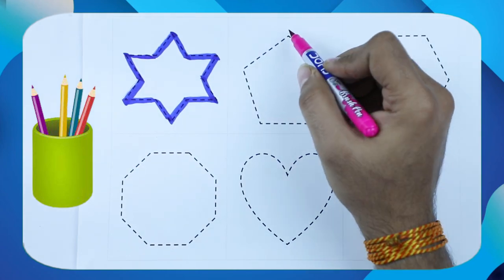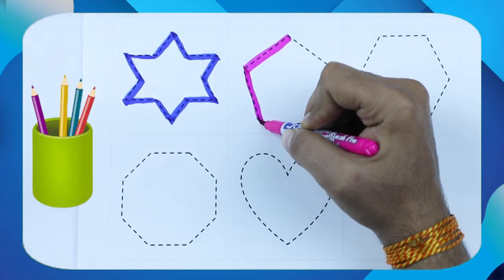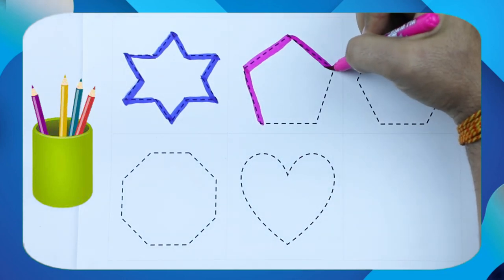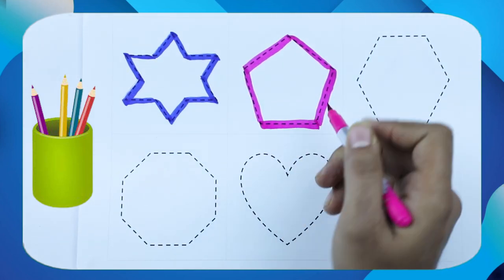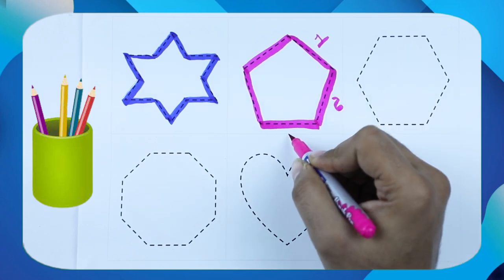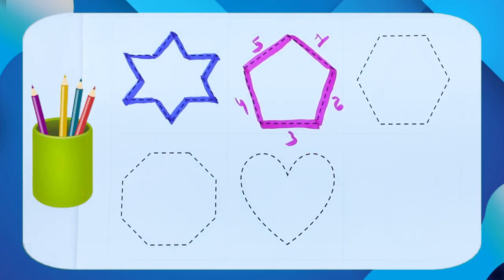Now we make pentagon. Pentagon have five lines, five surfaces. It's one, two, three, four, five. That's why it's called pentagon.